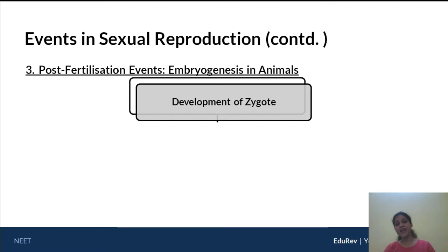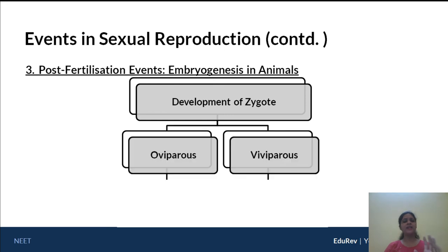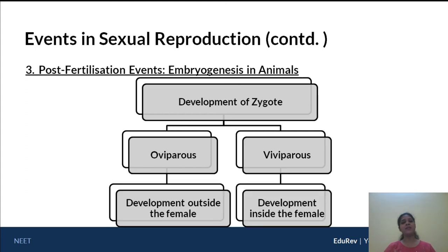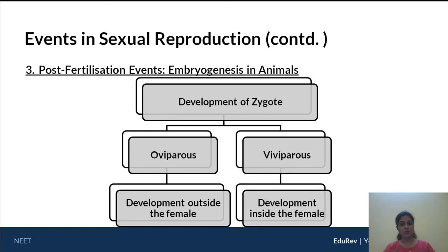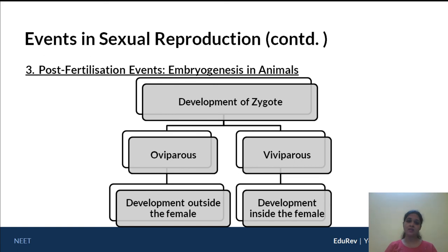We will study embryogenesis in animals and in plants. Development of a zygote in animals can take place in two ways: oviparous or viviparous. Oviparous means development takes place outside the female body — for example, frogs have external fertilization and external development. In the case of a hen, you have internal fertilization followed by external development. Both these conditions are oviparous. In the case of a human being, we are viviparous — internal fertilization followed by internal development within the female.